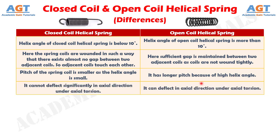Number 4: A closed coil helical spring cannot deflect significantly in the axial direction under axial torsion. Whereas an open coil helical spring can deflect in the axial direction under axial torsion.